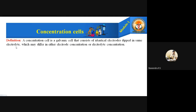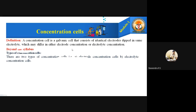The concentration of the electrolyte must also be the same. What is the difference? It may differ either in the electrode concentration — meaning the potential of the electrode may change between anode and cathode — or the electrolyte concentration may differ. This is the only change. So we have two types of concentration cells: electrode concentration cell and electrolyte concentration cell.